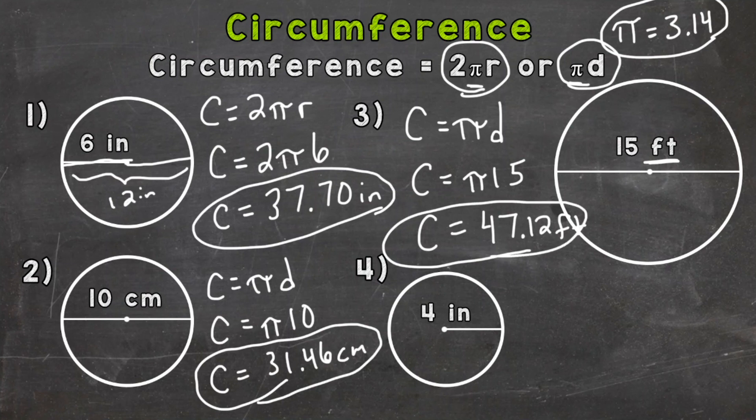Again, just to recap, circumference is the distance around a circle, so the perimeter. So if I were to trace or go around, I'm not drawing a perfect circle here, but go around that circle, the distance around would be 47.12 feet.